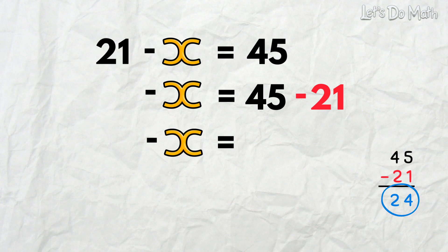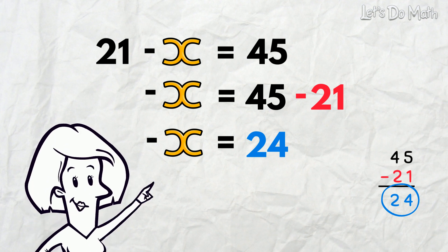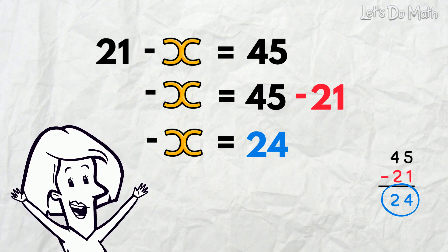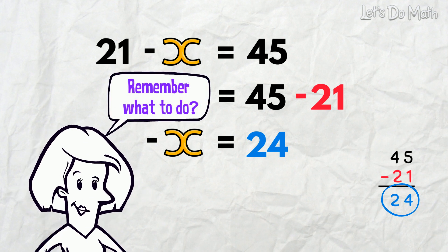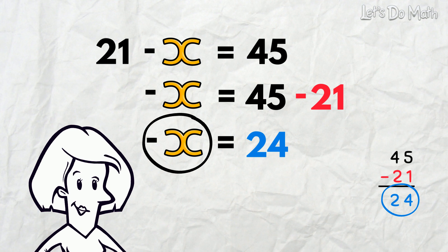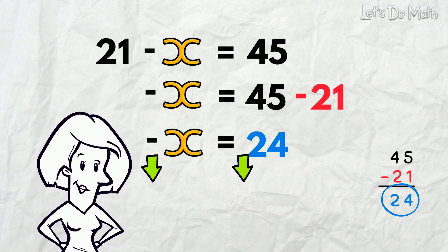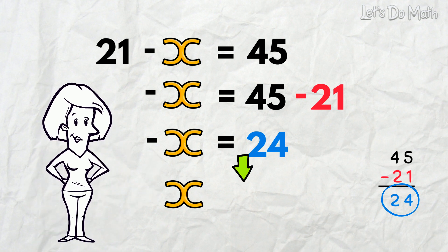Negative x equals 24. But we can't leave an answer with a negative variable. No negative x is allowed at the very end! Remember what to do? When we get to the end and have a negative variable, we take the inverse of both the variable and the constant. Positive x, or just x, equals negative 24. How about that?